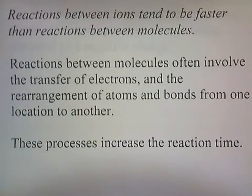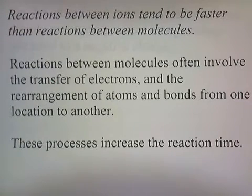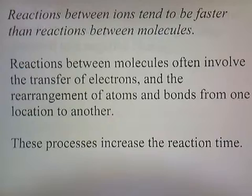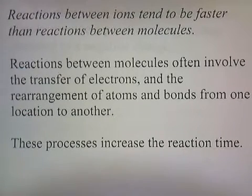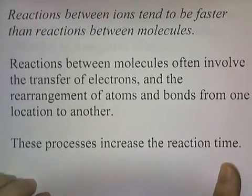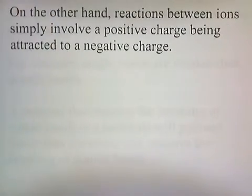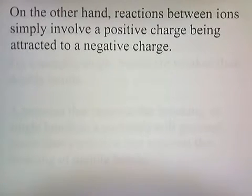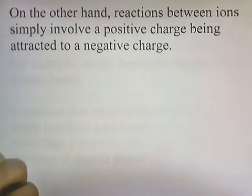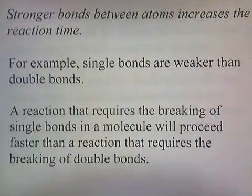Reactions between ions tend to be faster than reactions between molecules. Reactions between molecules often involve the transfer of electrons and the rearrangement of atoms and bonds from one location to another, and these processes increase the reaction time. On the other hand, reactions between ions simply involve a positive charge being attracted to a negative charge, so that's why ionic reactions are faster.